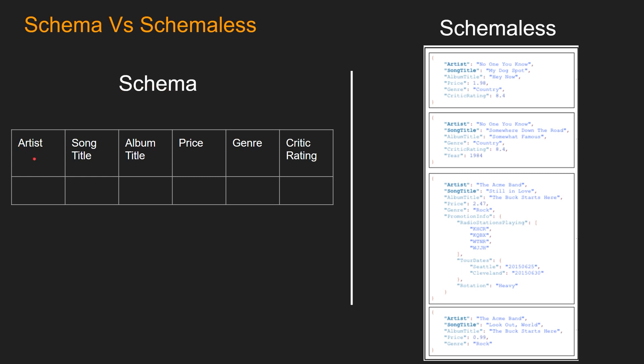Let's say we have a music table. On the left we have a schema used with a SQL database — you define the table with columns: artist, song title, album title, price, genre, and critic rating. All the rows in this table need to conform to this schema. So if for one row you need to put the release year for the album, you cannot, because there is no column defined in the schema for that.